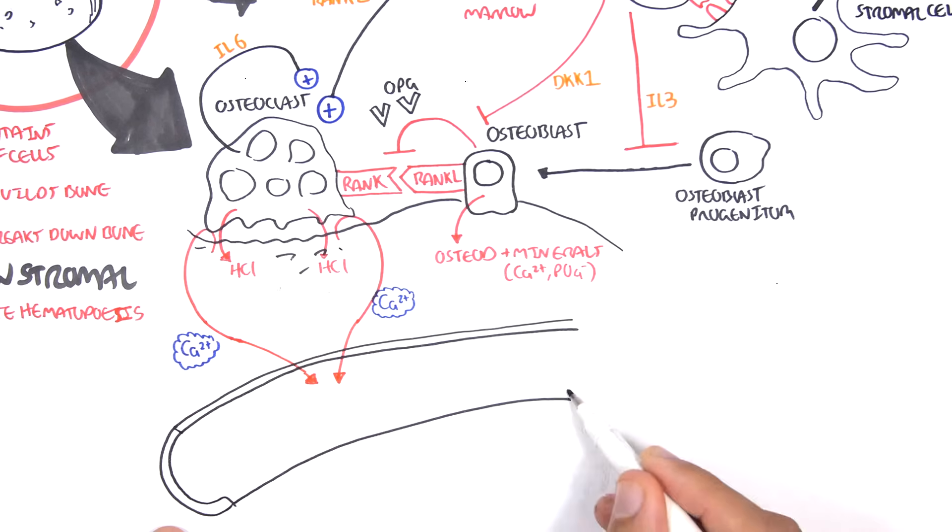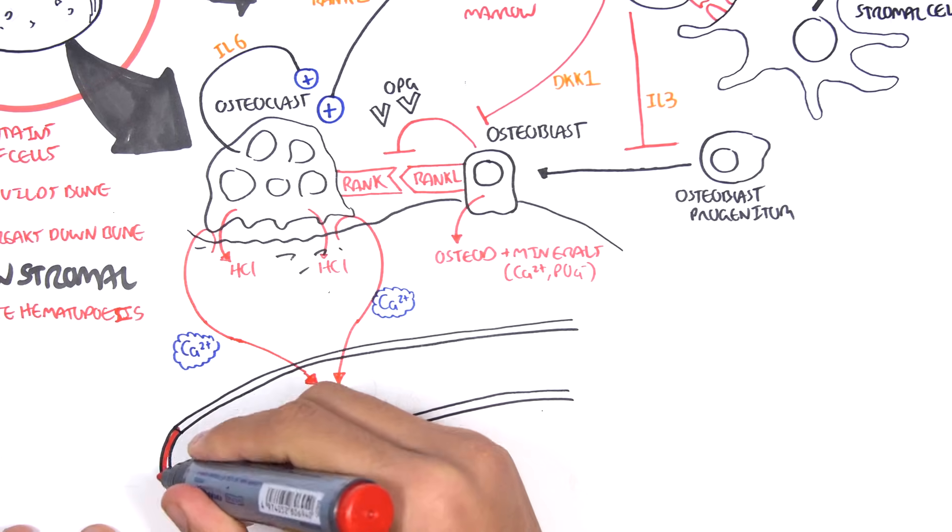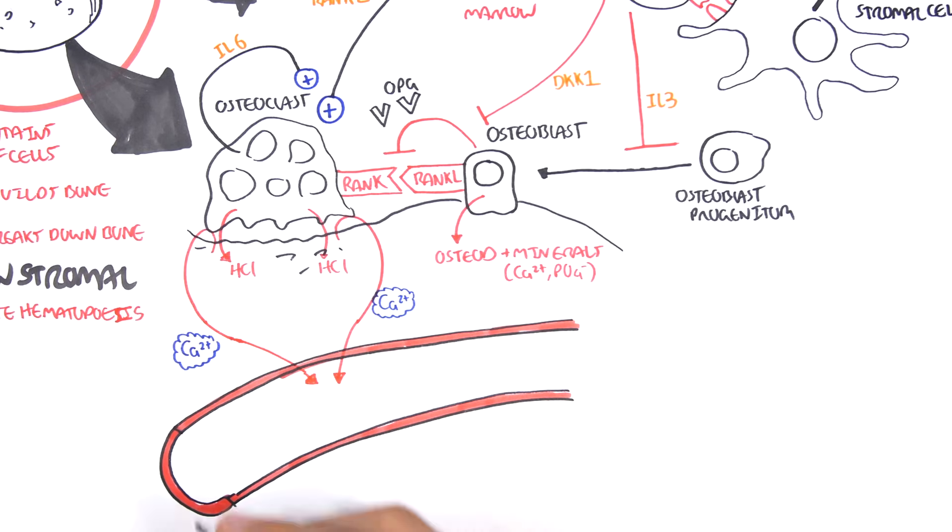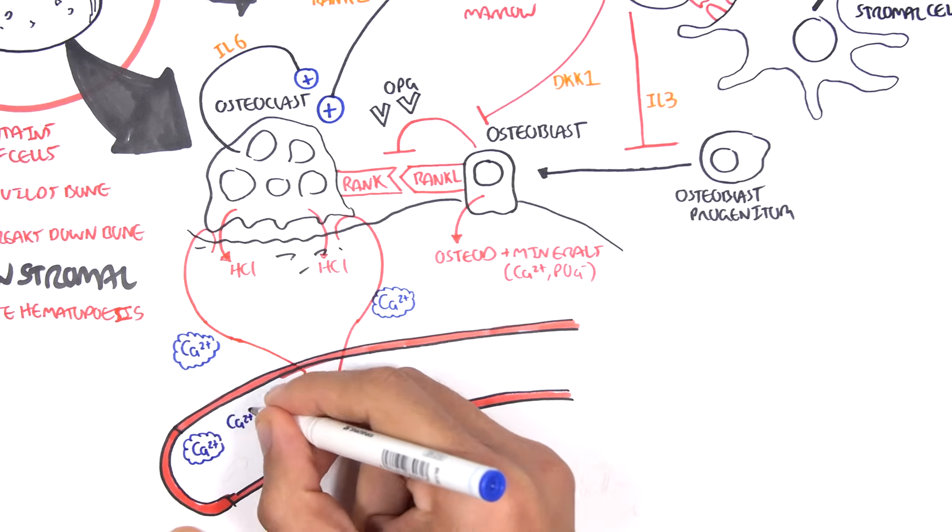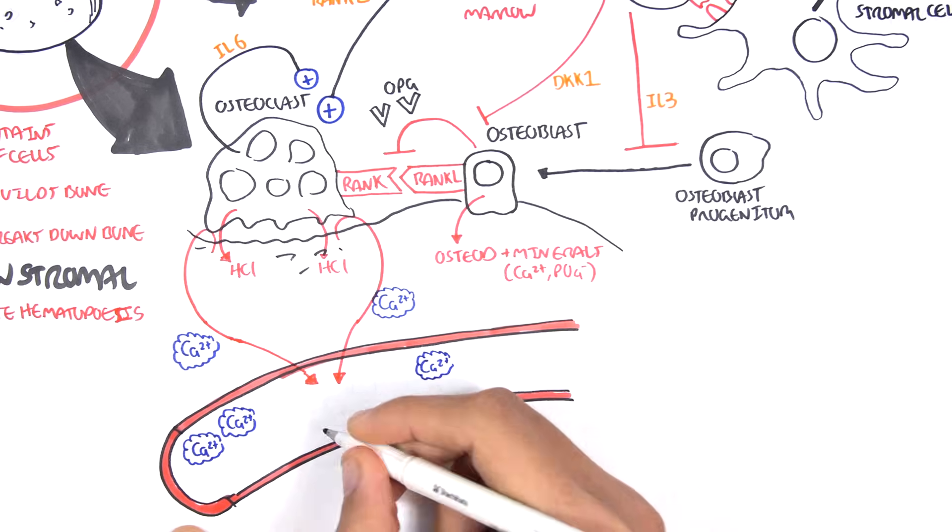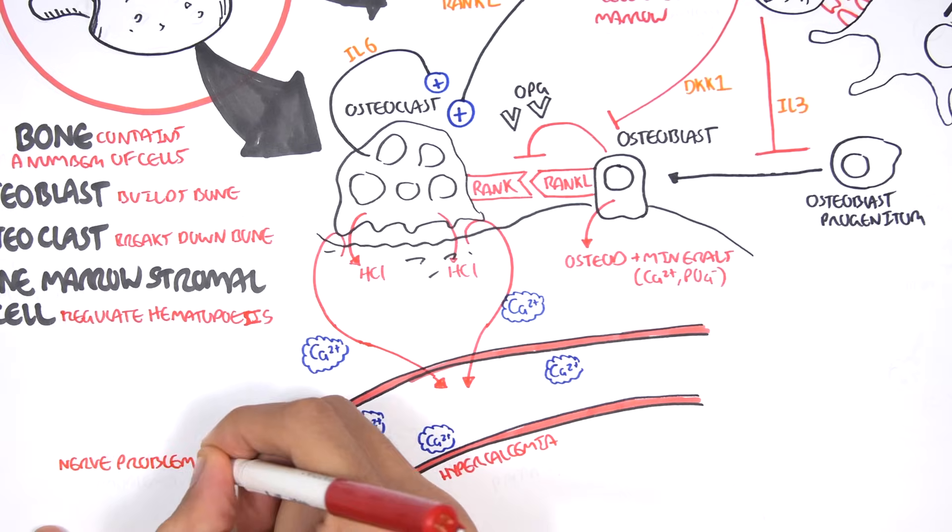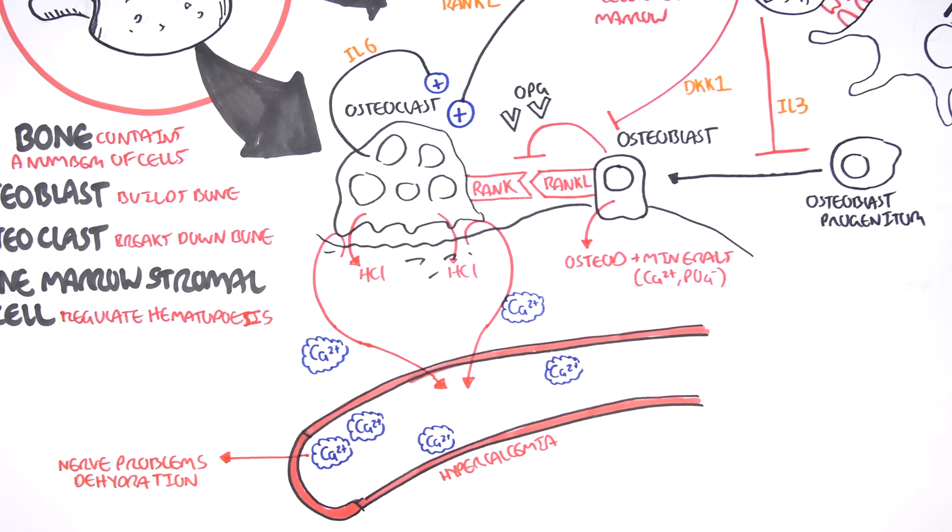When osteoclastic activity is stimulated, this will result in bone breaking down. An increase in osteoclastic activity will lead to fractures and lytic lesions. And also will result in more calcium entering the body. So in the blood we have hypercalcemia, which can cause nerve problems and dehydration.